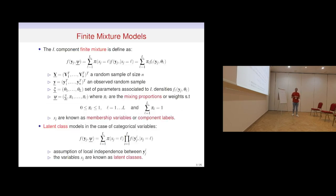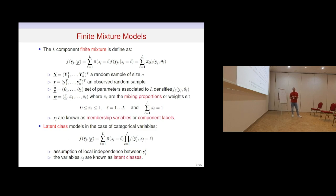A finite mixture with L components is defined as the weighted sum of densities at L with weight P_L, where P_L are known as mixing proportions, and they are the probability of F_J equals L, where F_J are known as membership variables or component labels. In the case of categorical variables and an assumption of local independence between indicators, mixture models are known as latent class models, and the variables F_J are known as latent classes. We focus on this particular case.